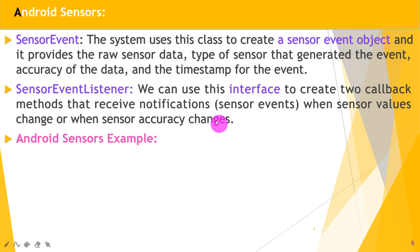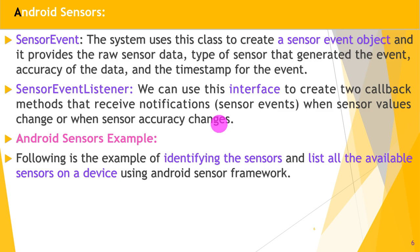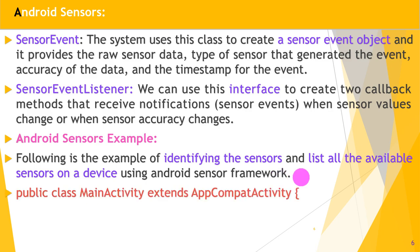Now it's time for an Android sensor example. Today we will see an example for identifying the sensors on your device — listing all sensors available in your mobile device using the Android sensor framework. In your main activity XML, we need to take one TextView where we display the list of all available sensors.